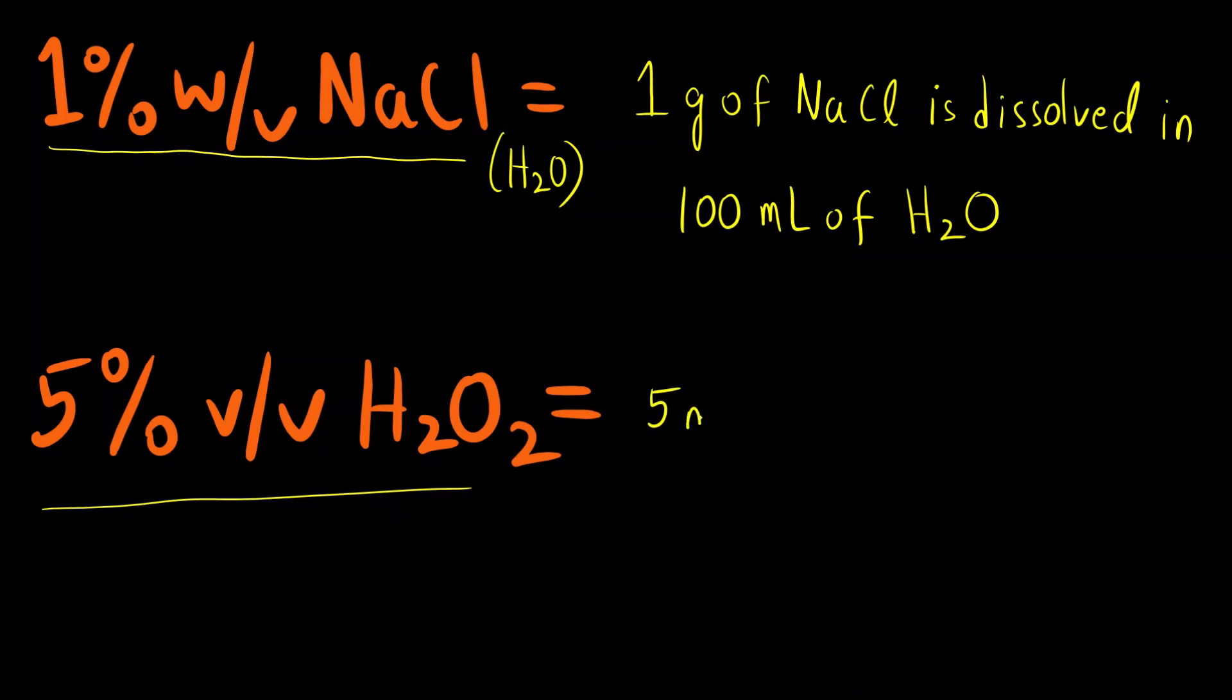So here 5% volume by volume means 5 ml of H2O2 is present in 100 ml of solvent, here let us say it is water. So 5 ml of H2O2, that is solute, is present in 100 ml of water.